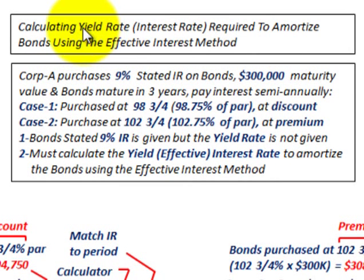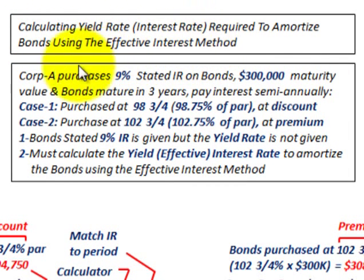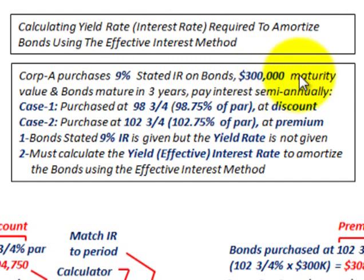What we're going to be going over here is calculating the yield rate or the interest rate required to amortize a bond using the effective interest method. For our example, Corporation A purchases 9% stated rate bonds for $300,000, which is their maturity value. The bonds mature in 3 years and pay interest semi-annually.